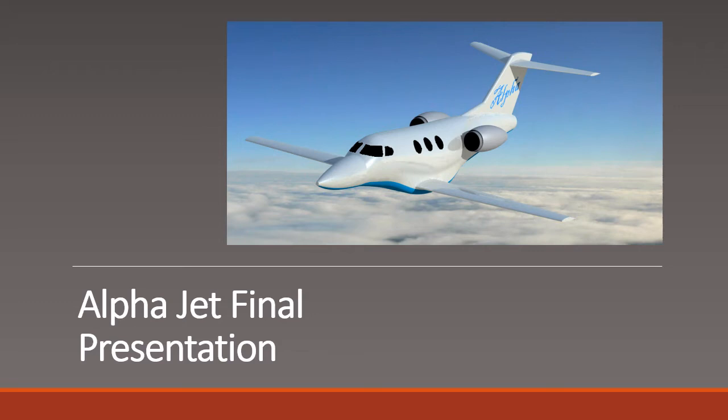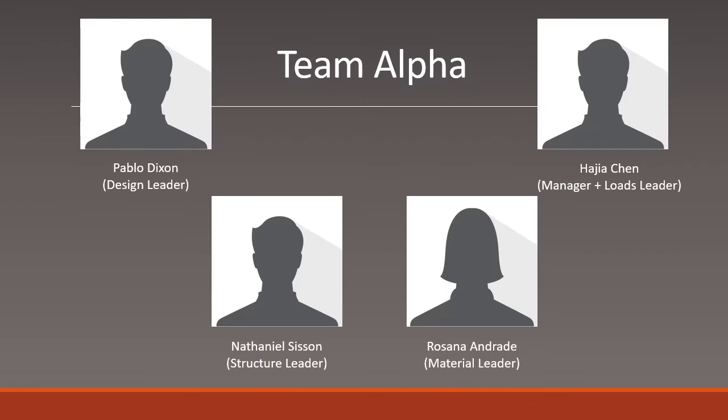Today we will be presenting the final presentation for the Alpha Jet. Team Alpha consists of four members: Pablo Dixon being the design leader, Nathan Sisson being the structure leader, Haja Chen being the manager and the loads leader, and myself, Rosanna, being the material leader.